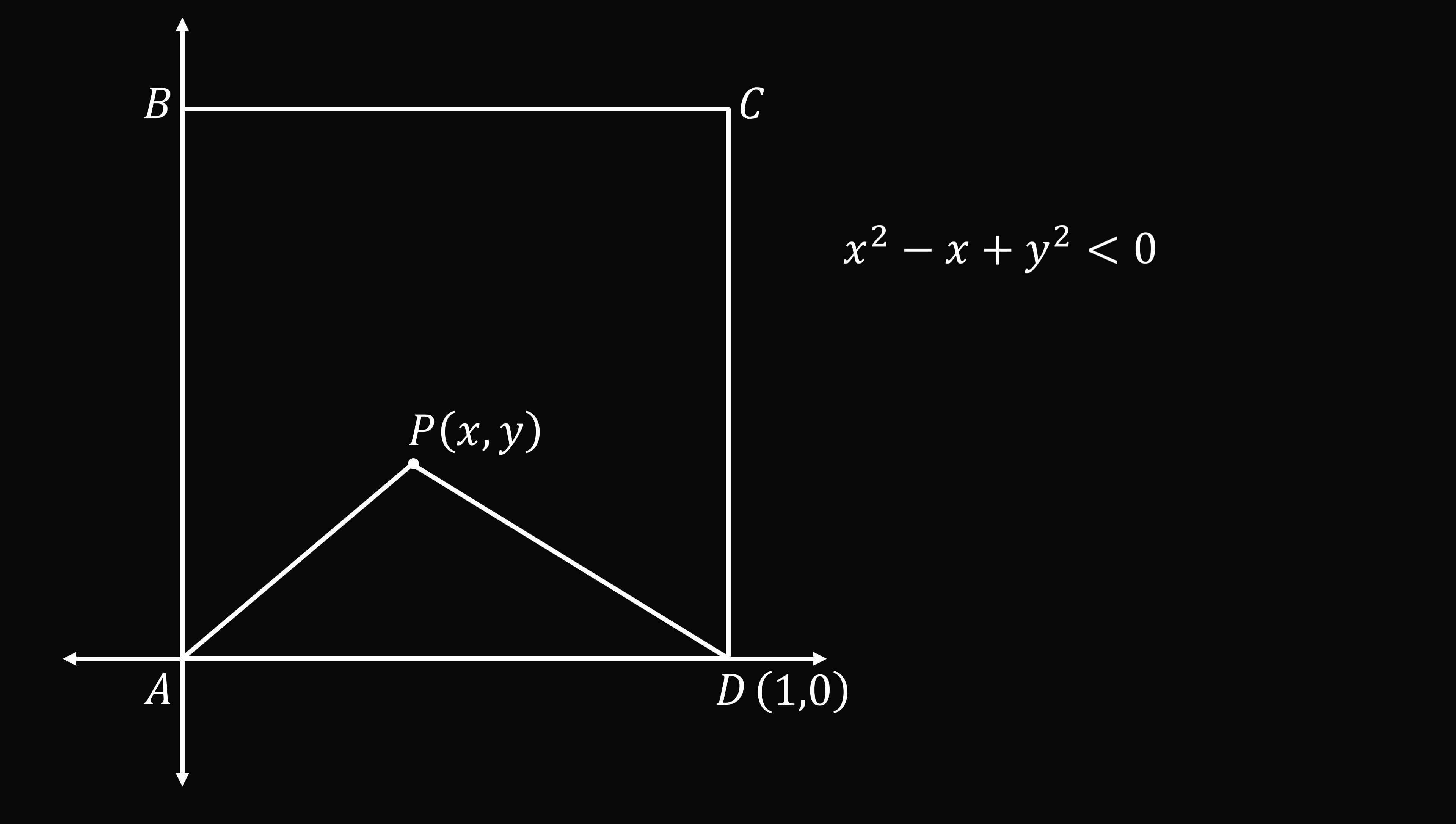So where do we go from here? Well, we use a standard trick of completing the square. So we will add 1/4 to both sides of the equation so that we can factor. We have the square of (x - 1/2) plus y² is less than the square of 1/2.